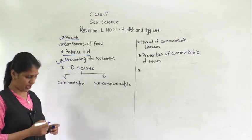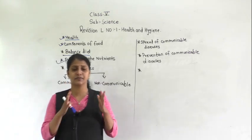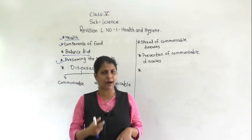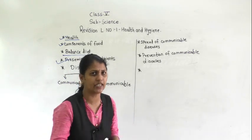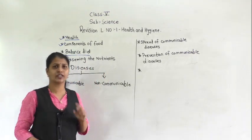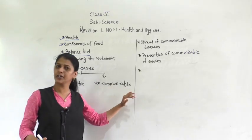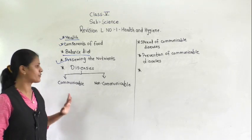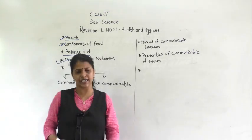Then we discussed diseases. A disease is a condition where a particular part of the body does not work properly. There are mainly two types of diseases: communicable and non-communicable diseases.